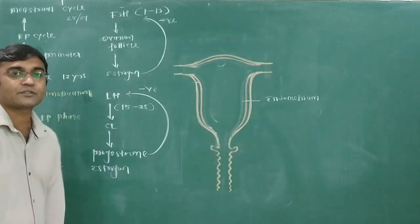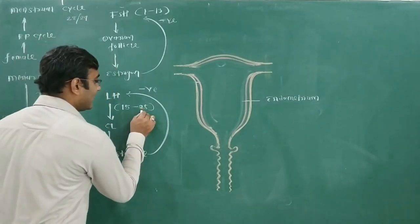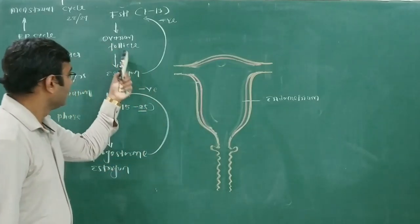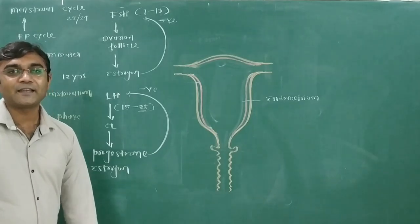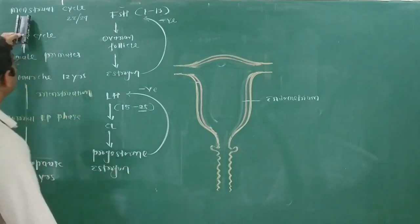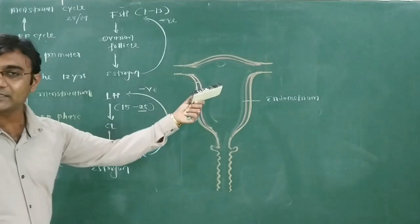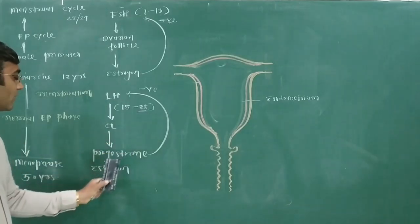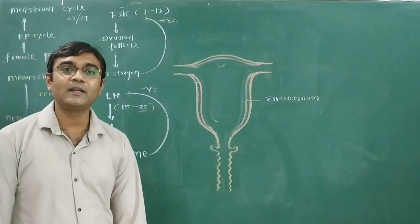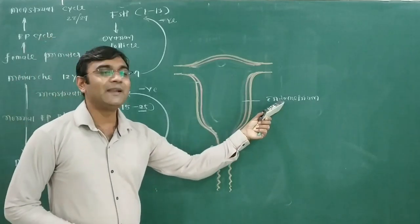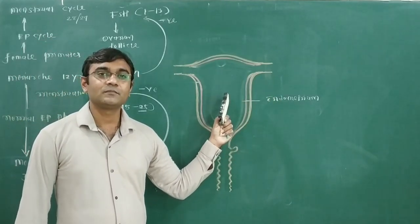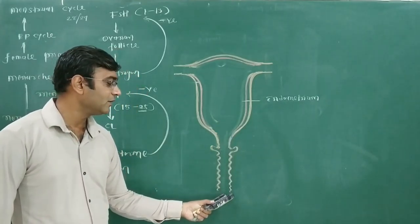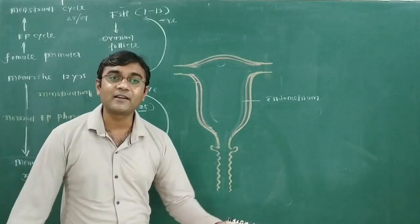This leads to both progesterone and estrogen decreasing. At day 28 of the uterine cycle — also called the menstruation cycle — there is a lower concentration of progesterone and estrogen inside the female blood. This causes the endometrium to break down, and its tissue and blood flow out of the body through the vagina as fluid — that is menstruation.